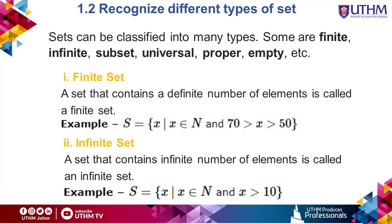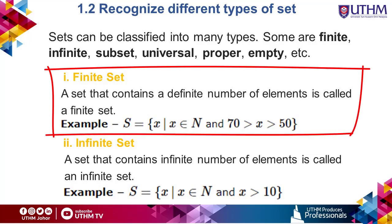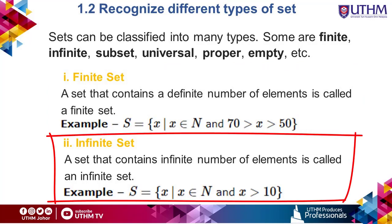In the previous subtopic I taught you how to represent sets. Now let us see the different types of sets. First, we have a finite set — a set that contains a definite number of elements. For example, set S is a set of natural numbers between 50 to 70; in other words, it has limited values. Next, we have an infinite set that contains an infinite number of elements. For example, set S is the set of natural numbers greater than 10, meaning the value of X starts from 11 to infinity.